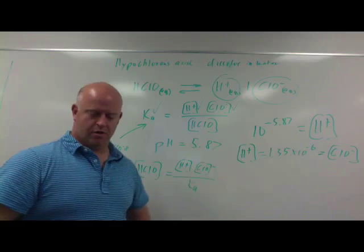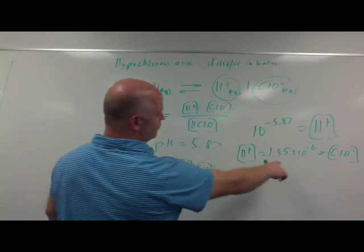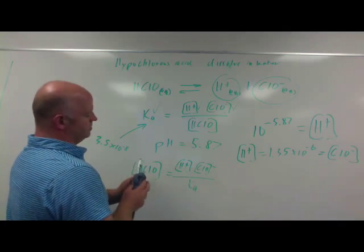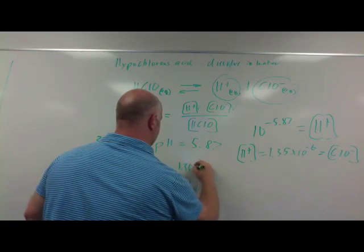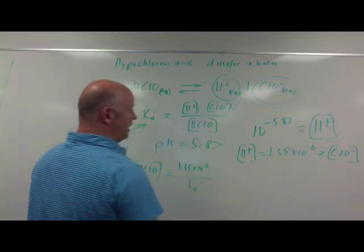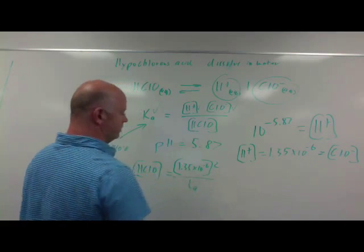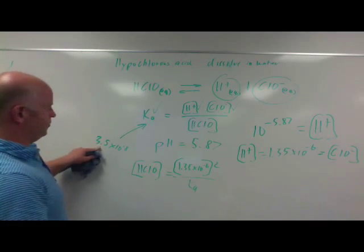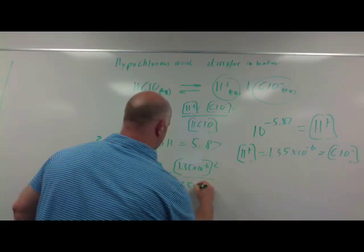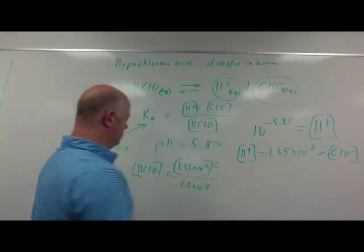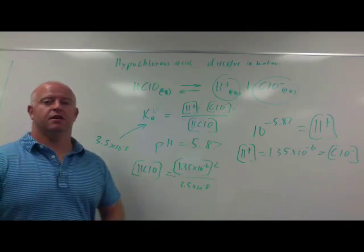I know these two, let's plug these numbers in. It's 1.35 times 10 to the negative 6, and we have it twice so that value actually becomes squared in here, and the Ka is 3.5 times 10 to the negative 8. Now I can solve for the concentration of my weak acid that is not ionized, that is still in solution.